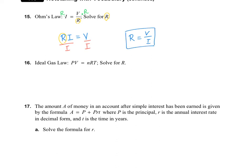Number 16: we want to solve for R, so I'll circle that. That means we need to get rid of the N and the T. I'll let you figure this one out on your own. I got R equals PV over NT.